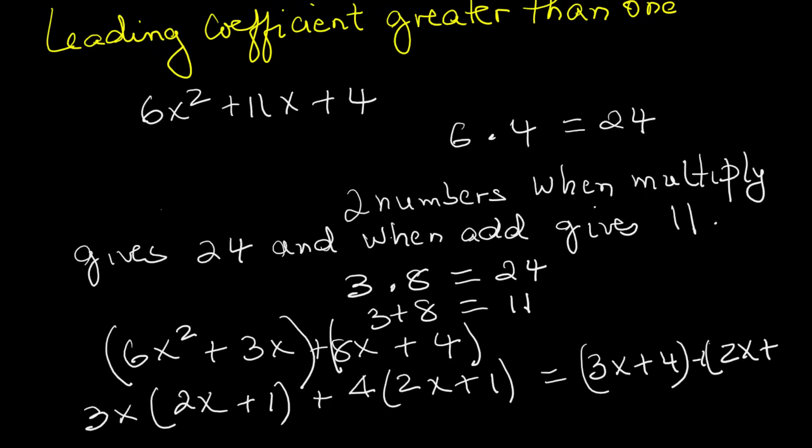This is called the AC method. Multiply the first and last, split the middle, then factor by grouping. Works every time.